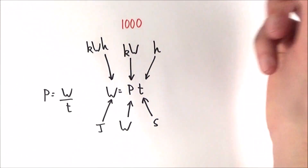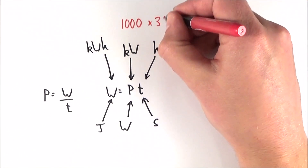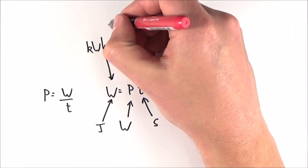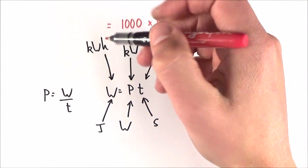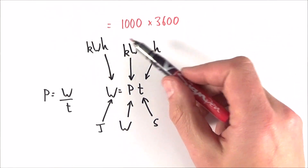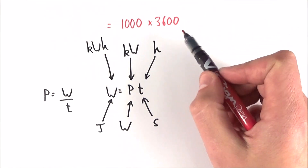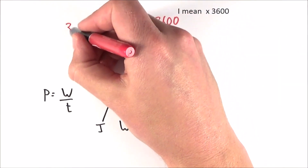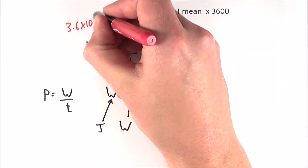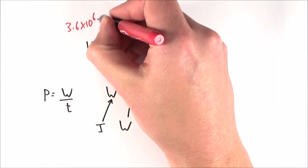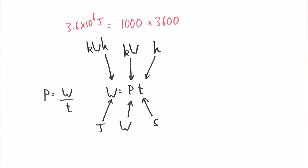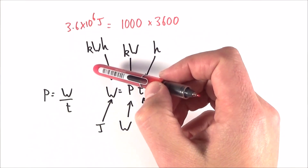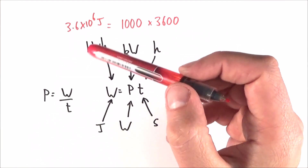Because a kilowatt is a thousand watts and an hour is three thousand six hundred seconds, one kilowatt hour is equal to a thousand times three thousand six hundred, which equals three point six times ten to the six joules. This conversion is quite important — you often need to convert between joules and kilowatt hours.